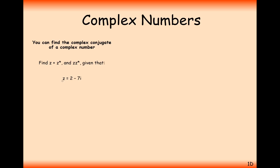Now let's have a look at this complex number here: Z equals 2 minus 7i. We want to find Z plus Z star, the complex conjugate, and Z times by its complex conjugate. For part A, we need to add the two parts together. Adding the real parts and imaginary parts, we're just going to get 4, because the imaginary parts — one positive, one negative — always cancel each other out. Effectively, all you need to do is double the real part.